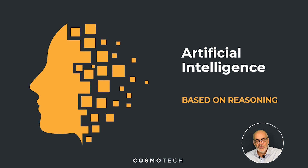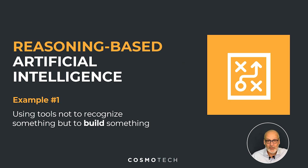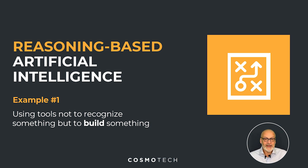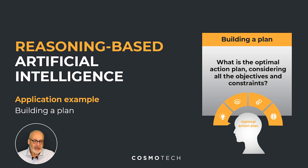But what about the reasoning part? There are some examples today. If you want to do planning — you want to plan and organize a group to accomplish something — you can use tools that are not recognizing something, but building a good plan based on your constraints. That's AI based on reasoning, because you have to reason to provide such a planning.